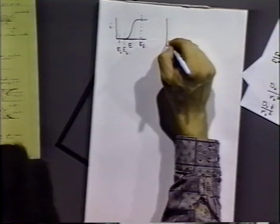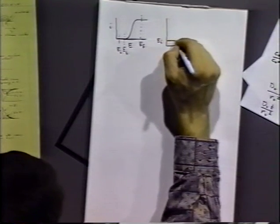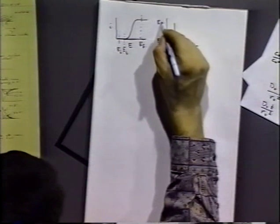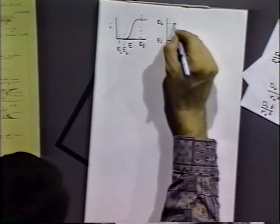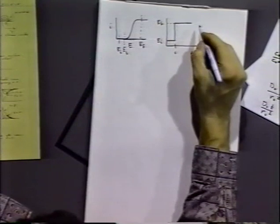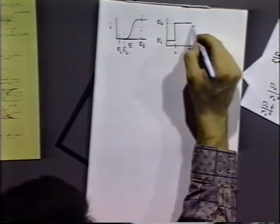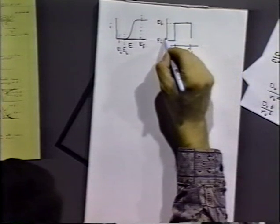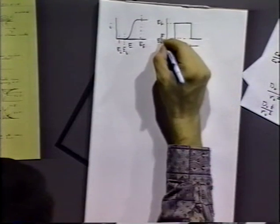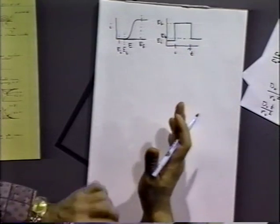Let's say at time zero we start with E sub i and then step it to E sub f — that's exactly the same as we've done before. But now let's do a potential step reversal where at some time, let's call it tau, we step backwards to E sub b. What might we expect to see out of that experiment?